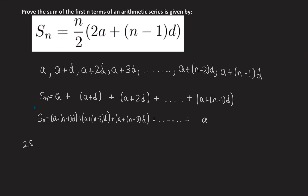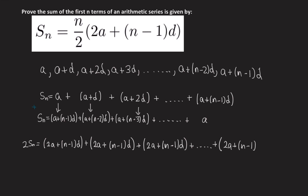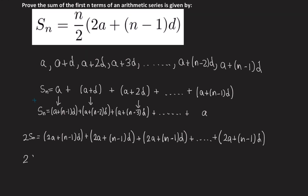If we add these two series together, we get 2Sn. The first pair gives 2a plus (n minus 1)d. The second pair: a plus (n minus 2)d and a plus d again gives 2a plus (n minus 1)d. The third pair also gives 2a plus (n minus 1)d. This carries on all the way to the end, each pair summing to 2a plus (n minus 1)d.